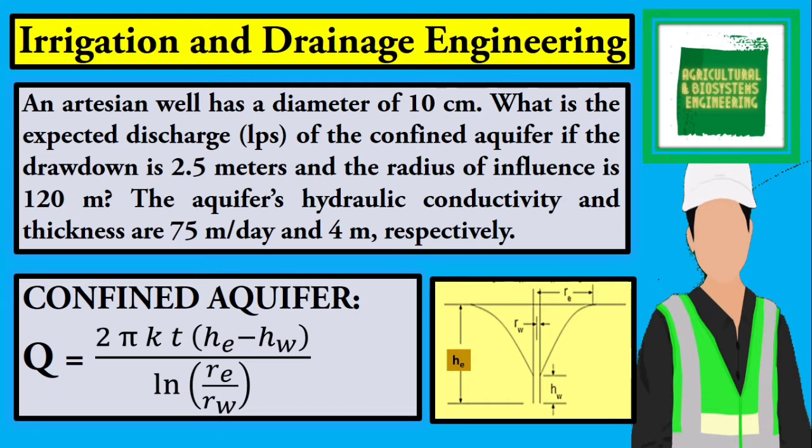An artesian well has a diameter of 10 cm. What is the expected discharge in liters per second of the confined aquifer if the drawdown is 2.5 m and the radius of influence is 120 m? The aquifer's hydraulic conductivity and thickness are 75 m per day and 4 m, respectively.